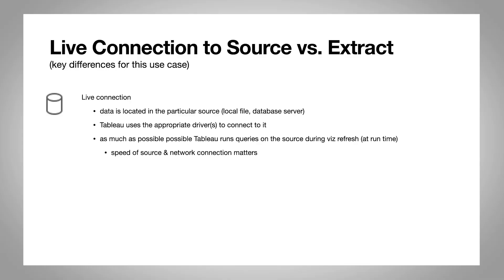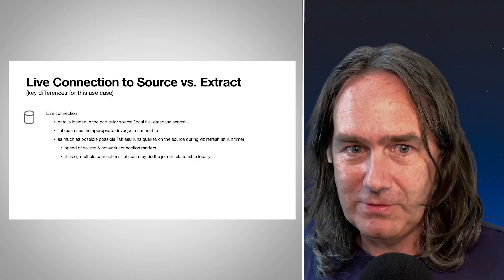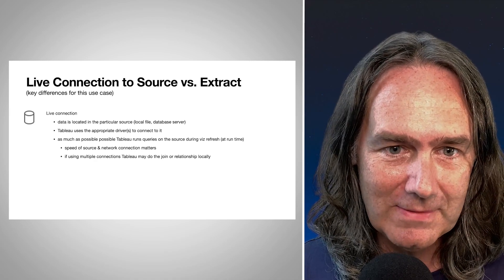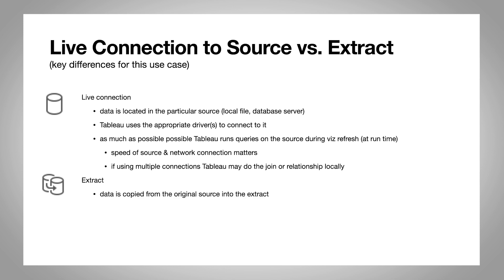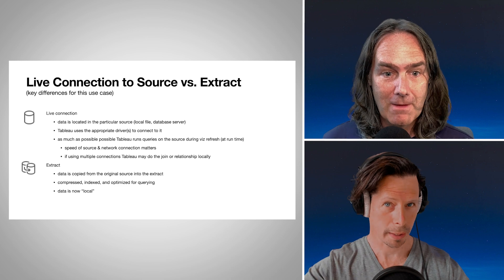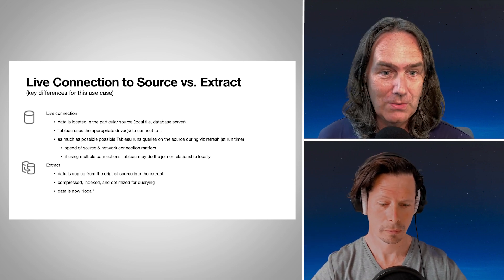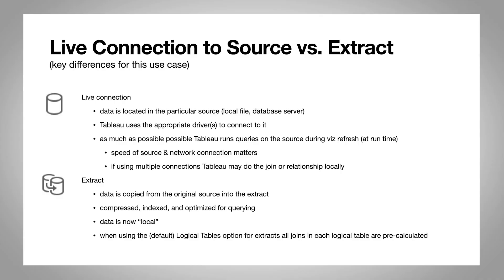The speed of the network connection matters here. If there are multiple connections, Tableau may be able to push information into the remote source to do a join or handle the relationship out there, or it'll bring data back and do a join locally. With extracts, data is copied from the original source, compressed, indexed, and goes through optimizations for analytical queries — effectively local to Tableau, avoiding network round trips, which can be a huge performance increase.